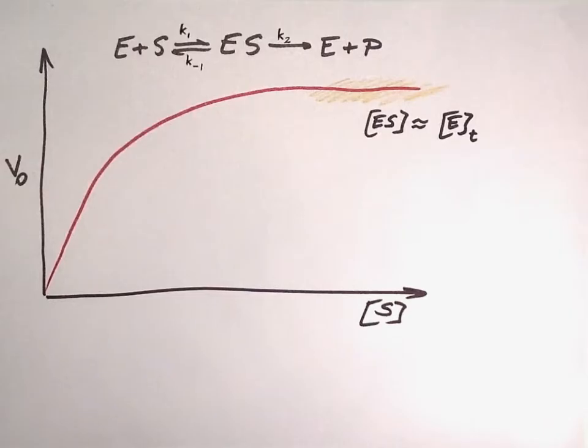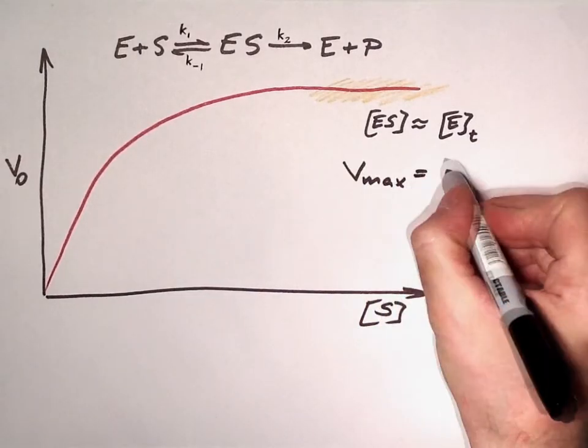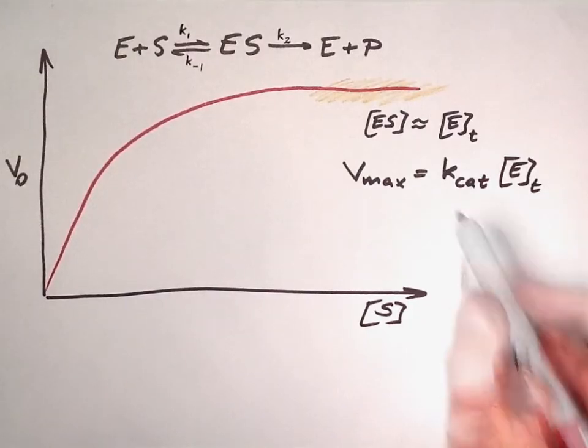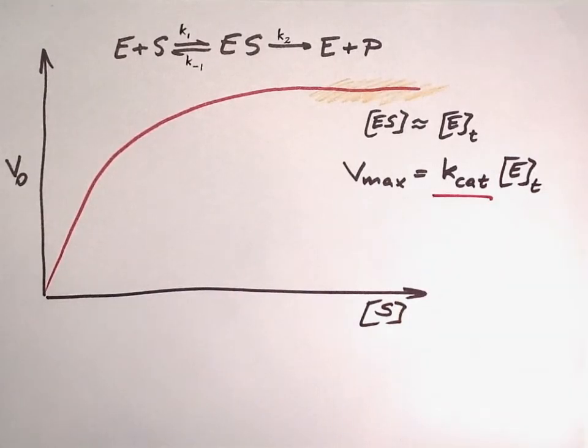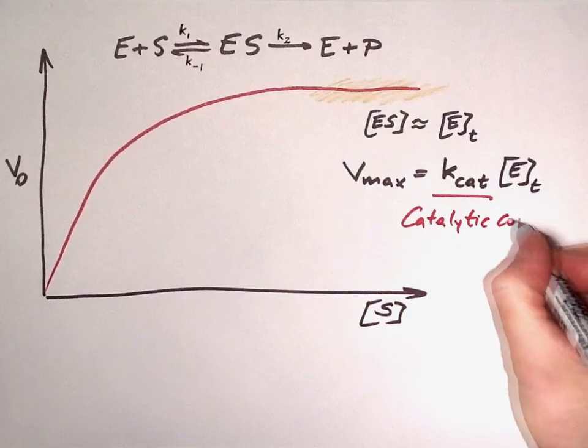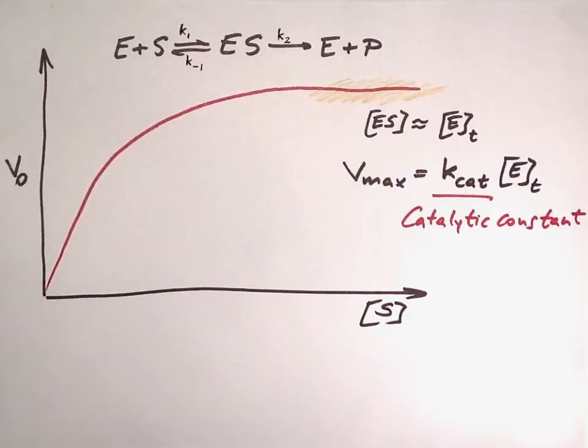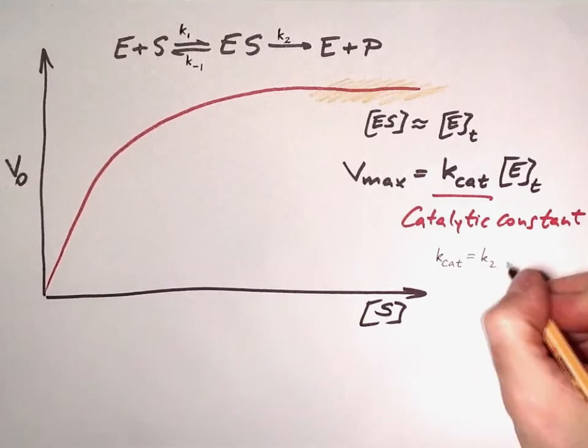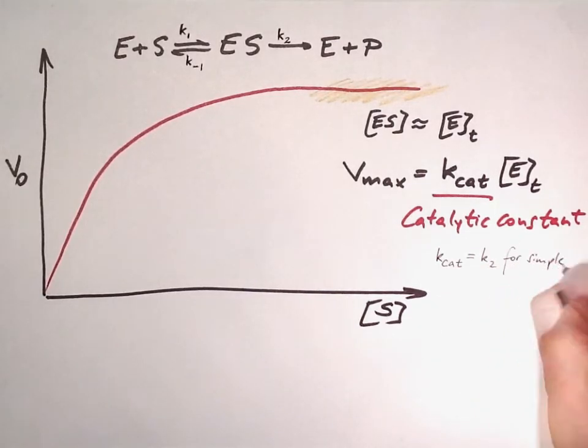Vmax, as we've seen earlier, depends in a linear way on the total enzyme concentration. Kcat is called the catalytic constant. For a simple one-step reaction as above, Kcat is equal to K2, the rate constant of ES conversion to free enzyme and product via catalysis.